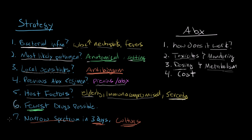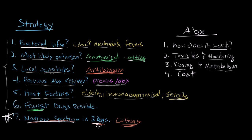Finally, and perhaps the most important aspect of our strategy — I'm going to put a star here — you want to narrow your spectrum within three days. Our strategy of antibiotic selection is really an empiric guess: we know we have an infection, we know the site, we know the most likely pathogen, and we pick an antibiotic we believe will best target it. However, if we can get cultures and identify the exact pathogen, we want to narrow our antibiotic use to specifically target that one pathogen, which reduces our risk of developing drug resistance.